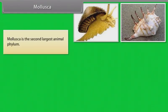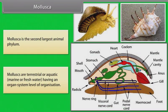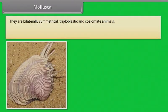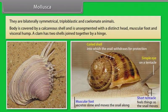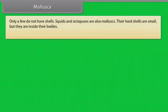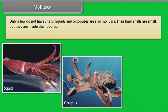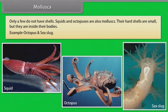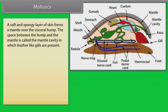Mollusca is the second largest animal phylum. Molluscs are terrestrial or aquatic — marine or freshwater — with organ system level of organization. They are bilaterally symmetrical, triploblastic and coelomate animals. The body is covered by a calcareous shell and is unsegmented with a distinct head, muscular foot and visceral hump. A clam has two shells joined together by a hinge; only a few molluscs do not have shells. Squids and octopuses are also molluscs, with hard shells that are small and located inside their bodies. A soft, spongy layer of skin forms a mantle over the visceral hump; the space between the hump and the mantle is called the mantle cavity, in which feather-like gills are present.